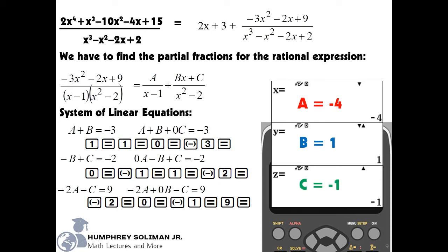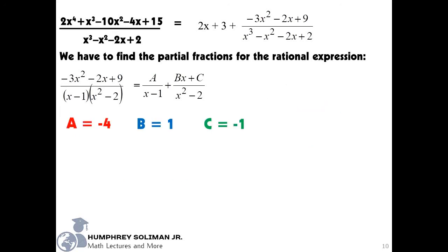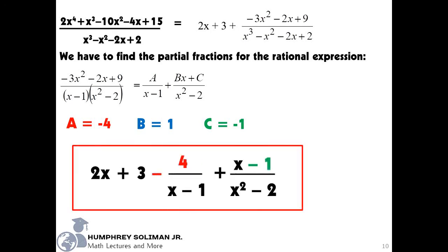We now have the values of a, b, and c: a equals negative 4, b equals 1, and c equals negative 1. Please make sure that you don't switch the values of a, b, and c, or else your answer will be inaccurate. Our final answer, the sum of a polynomial and partial fractions is: